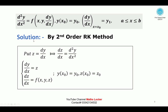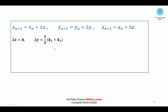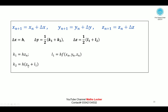The second order differential equation is converted into two first order differential equations. Starting at point (x₀, y₀, z₀): xₙ₊₁ = xₙ + Δx, yₙ₊₁ = yₙ + Δy, zₙ₊₁ = zₙ + Δz. Where Δx = h, Δy = ½(k₁ + k₂), Δz = ½(l₁ + l₂). k₁ = h·zₙ, l₁ = h·f(xₙ, yₙ, zₙ), k₂ = h·(zₙ + l₁), l₂ = h·f(xₙ + h, yₙ + k₁, zₙ + l₁).